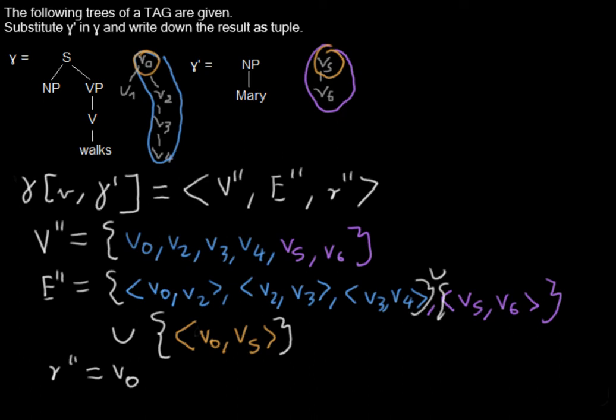And well, if we are done with it. Well, I can write you down the new tree. It looks like this. It's S, NP, VP, V, NP. And we are having our new substitution link. And here we are having NP, Mary. So this is our tree after we substituted this tree into this tree into this node.